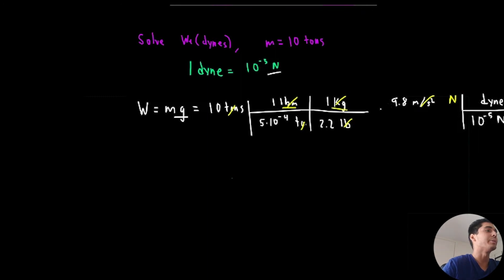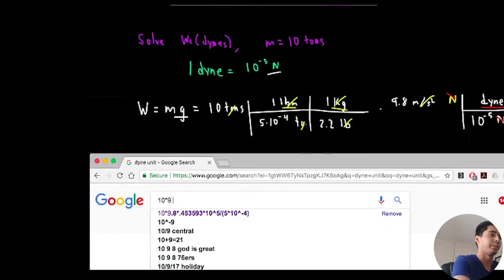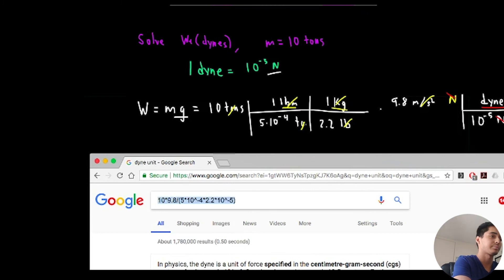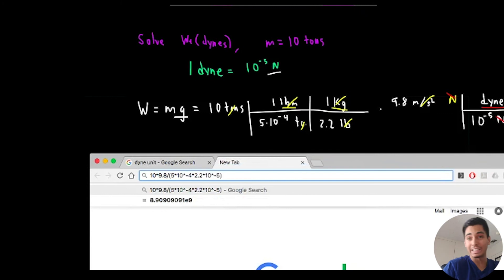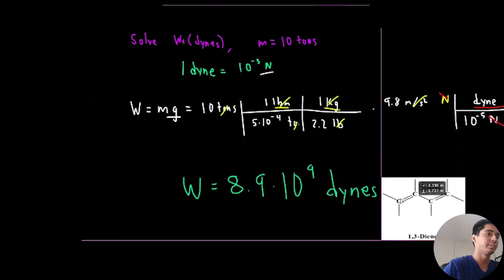Now I can simply divide 10 to the negative 5 newtons per dyne. And lo and behold we can cancel out newtons and newtons, we're finally at dynes. Golly. So let's multiply this out. 10 times 9.8 divided by 5 times 10 to the negative 4 times 2.2 times 10 to the negative 5. 8.9 times 10 to the 9.